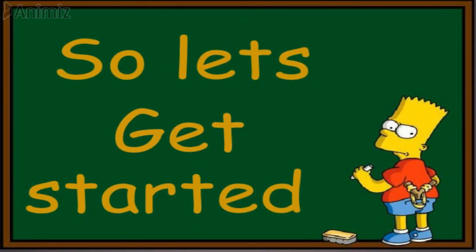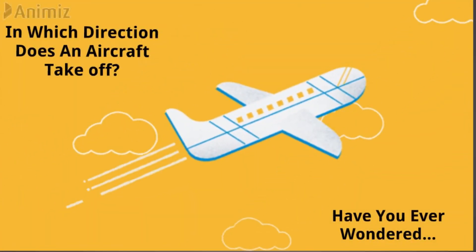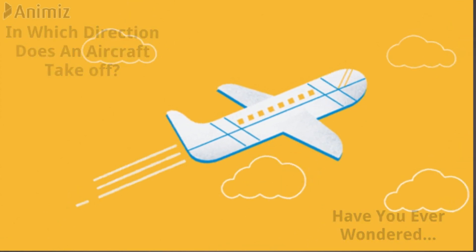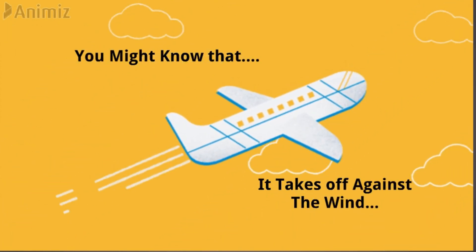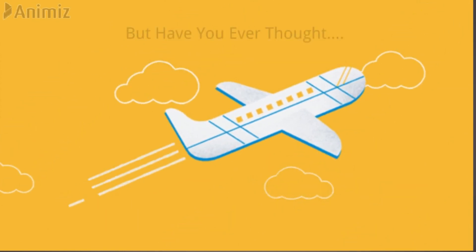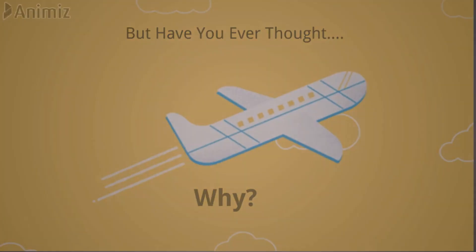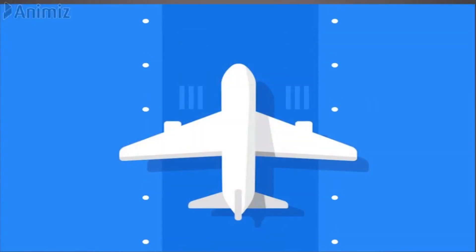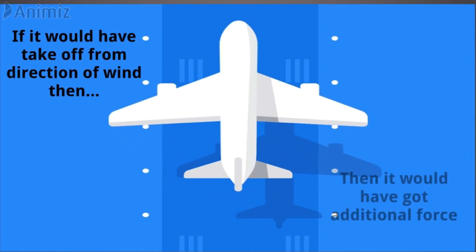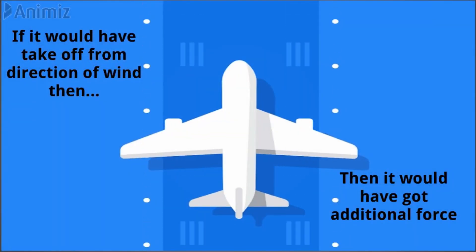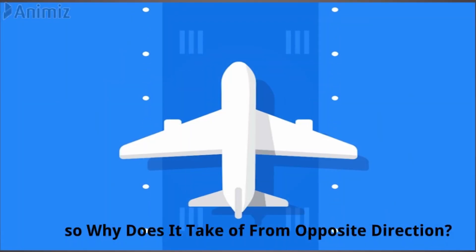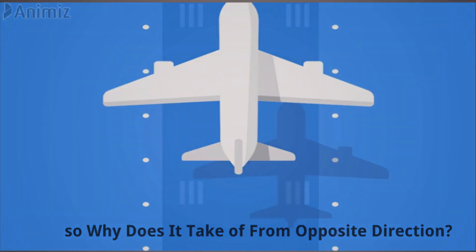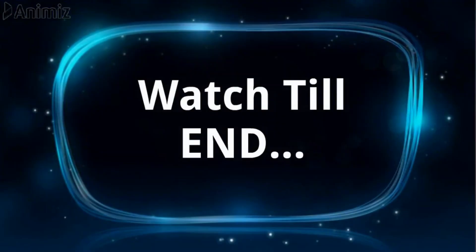For now, let's get started with our topic. Have you ever wondered in which direction does an aircraft take off? Many of you would know that aircraft take off in the direction opposite to that of wind — but have you ever thought why? If the aircraft were to take off in the direction of wind, it would get additional force which would help in taking off. So why does it take off from the opposite direction?